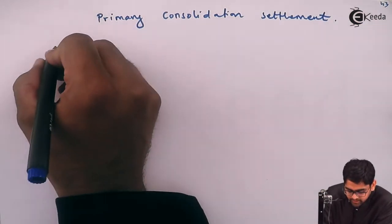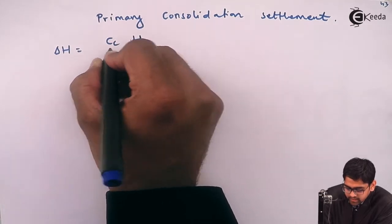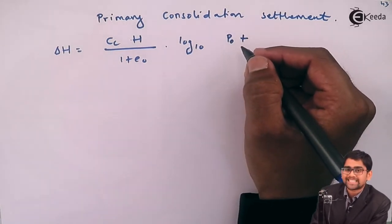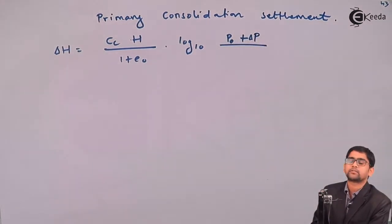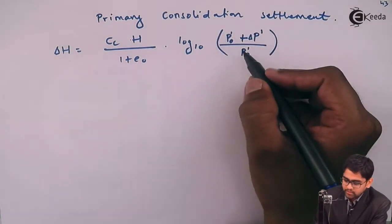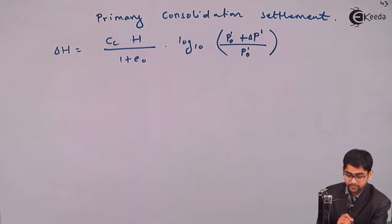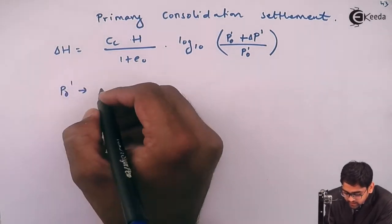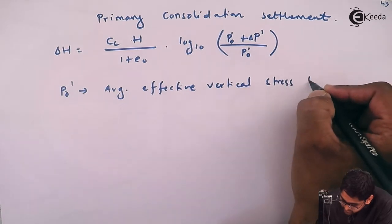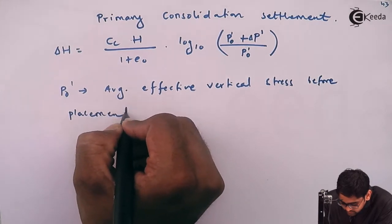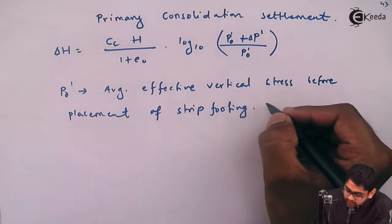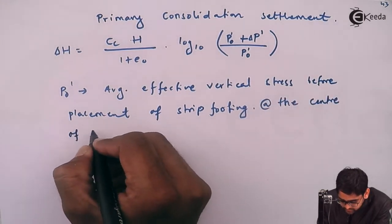The primary consolidation settlement is calculated as: delta H = (CC × H) / (1 + E0) × log base 10 of [(P0' + delta P) / P0'], where P0' is the initial effective vertical stress before placement of the footing, and delta P is the additional effective stress due to the structure. This P0' must be evaluated at the centre of the compressible layer.